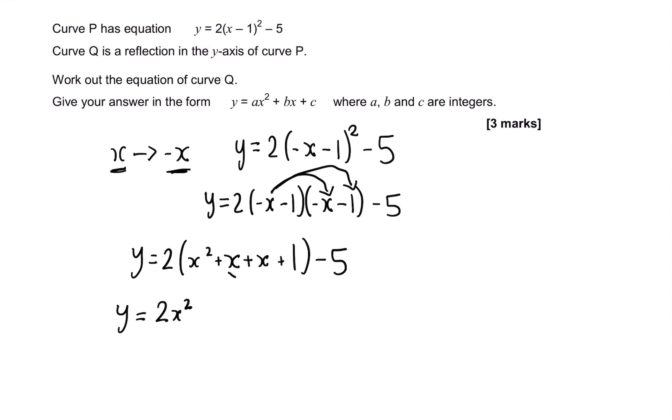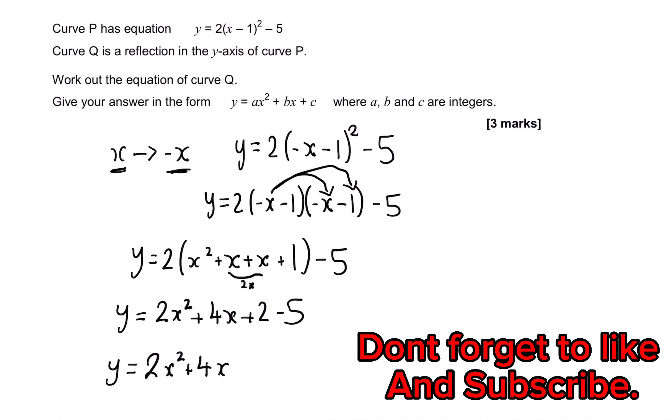Now we can just simplify this, giving us 2x squared. These two x's are going to add up to become 2x, so we multiply it by 2: 4x plus 2 times 1 is 2, minus 5. So our equation for Q is just y equals 2x squared plus 4x minus 3, and that's our final answer.